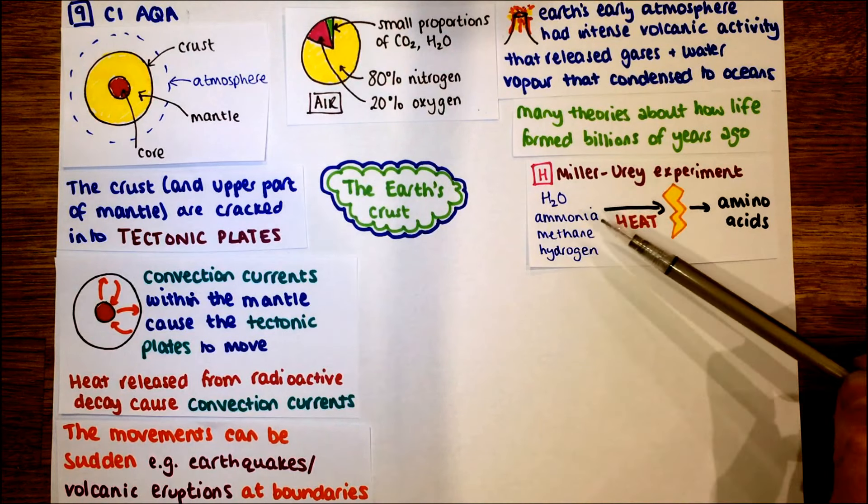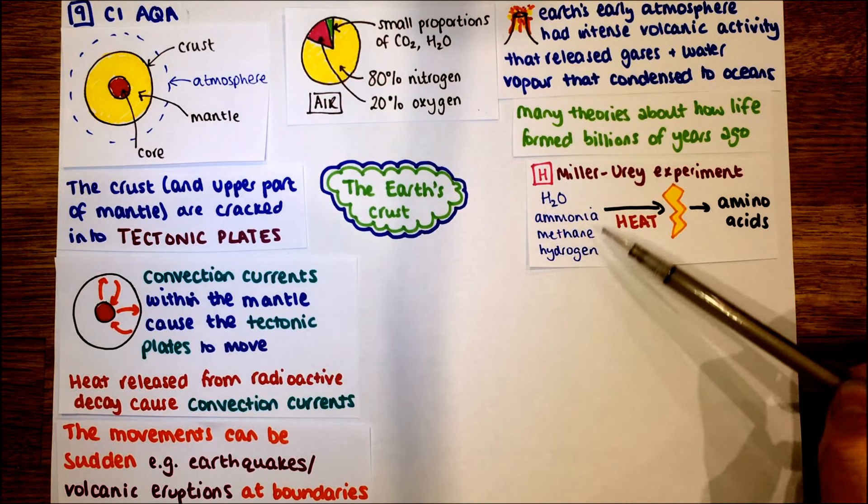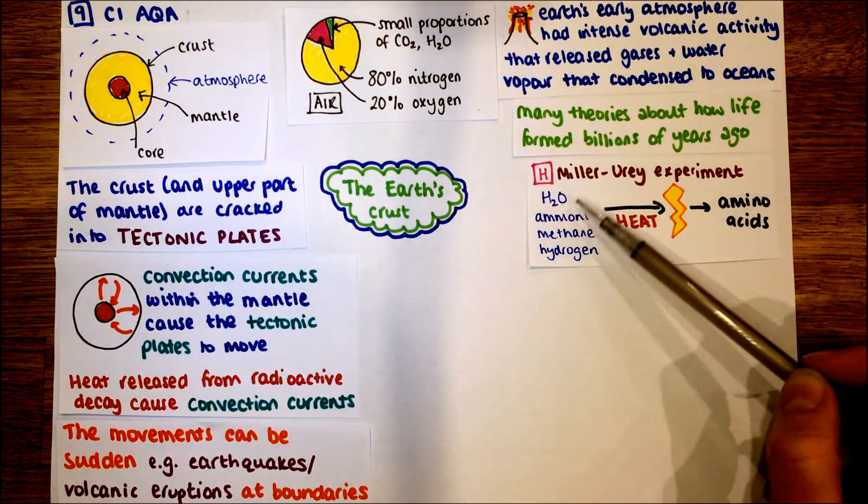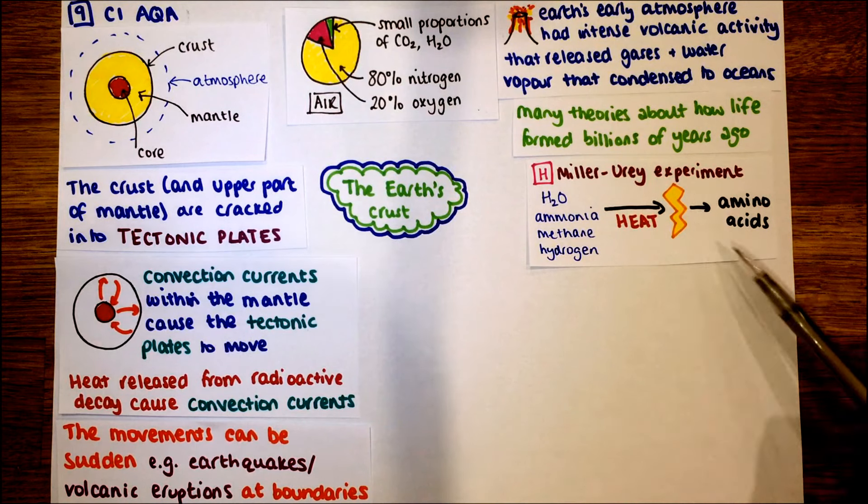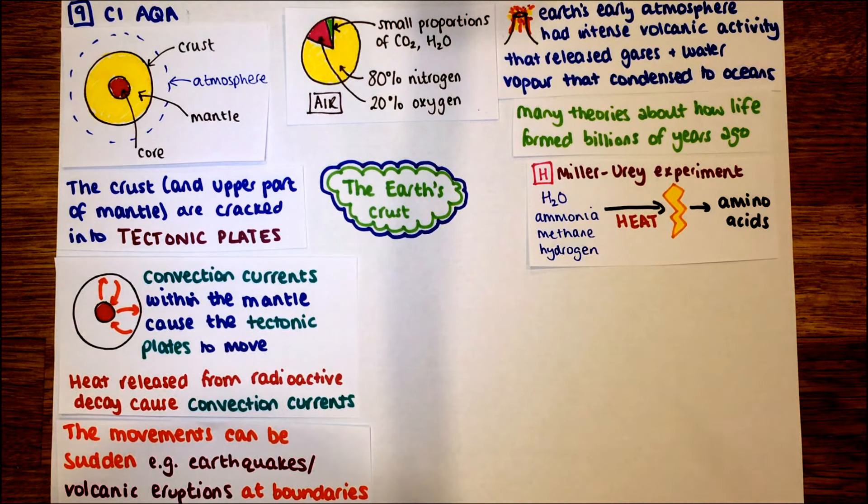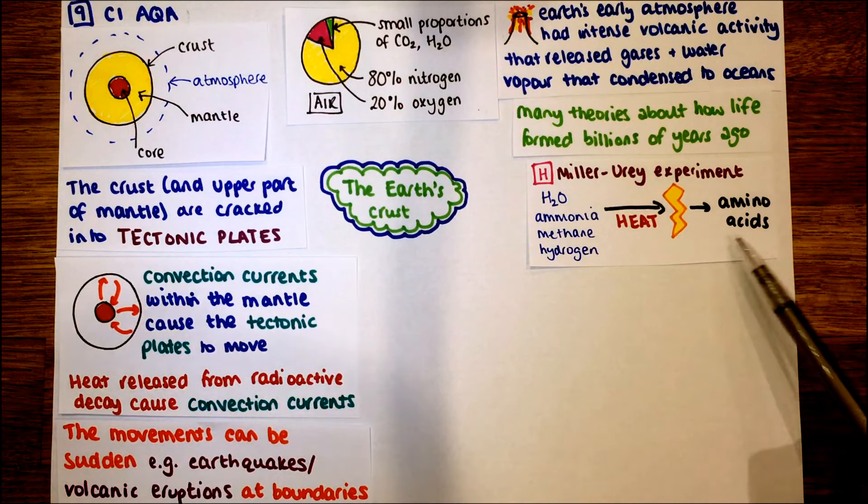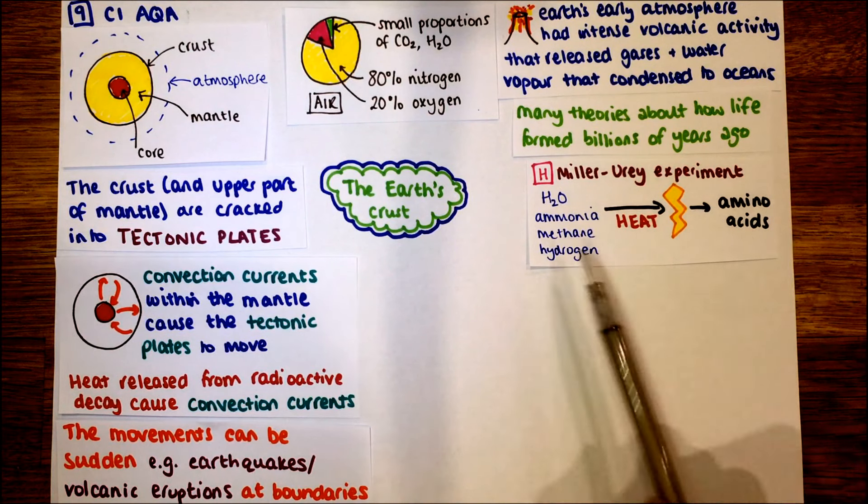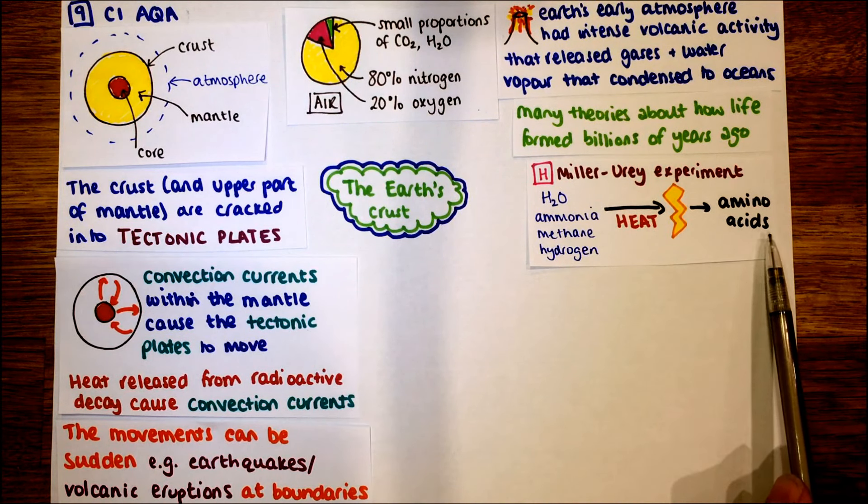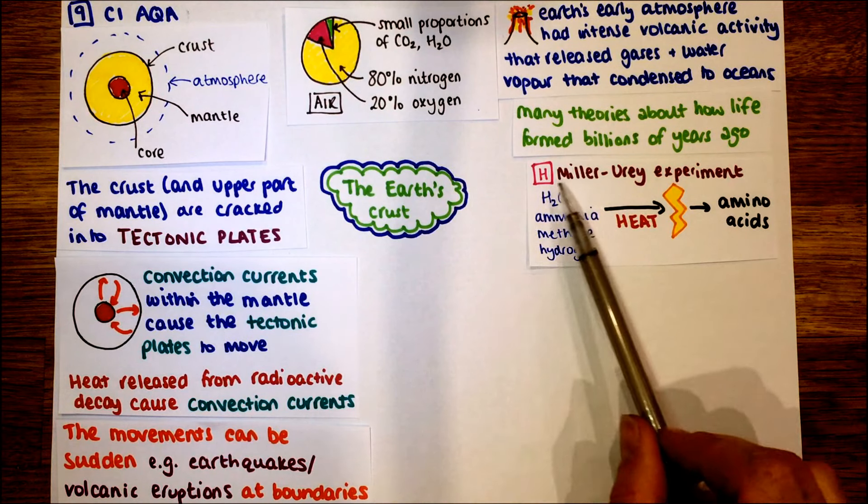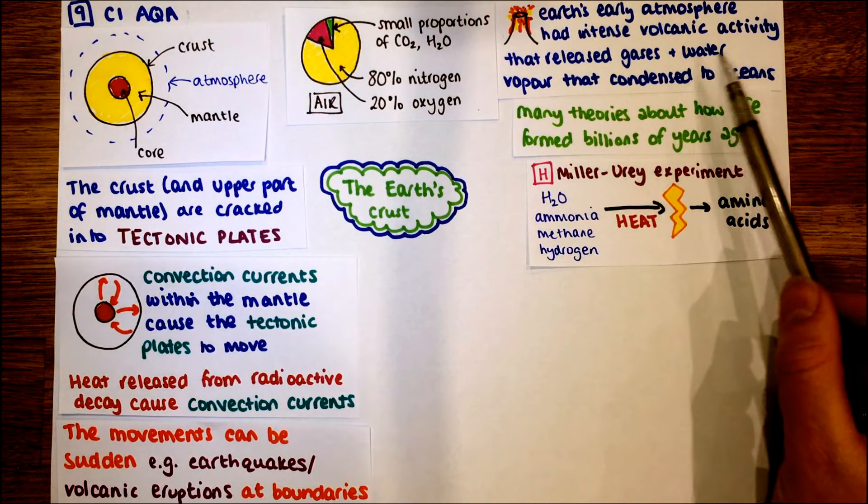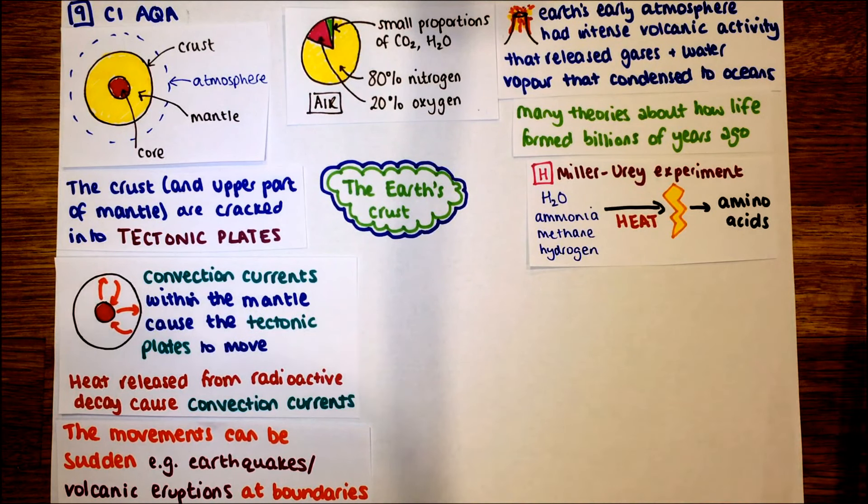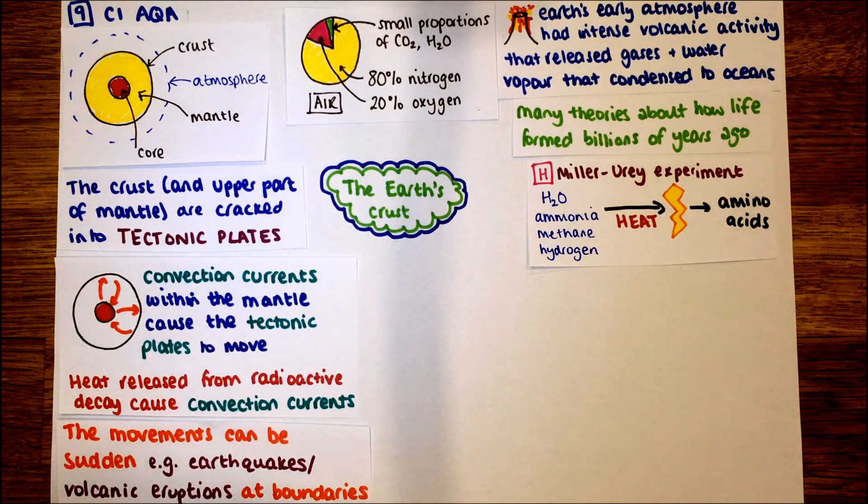Basically, what they did is they put together the compounds they believed were in the beginning of the earth, so water, ammonia, methane, and hydrogen. They heated it up to vaporise that water. They then gave it a shock of electrical energy, so a bit of electricity in there. And what we found is it did form amino acids. Those amino acids are the building blocks of life. They want to form proteins, which are building blocks of us. So the Miller-Urey experiment goes some way to prove that with the elements and the compounds we believe were on the early earth's atmosphere or were present with heat and electrical energy, we could have generated amino acids needed for life on earth.